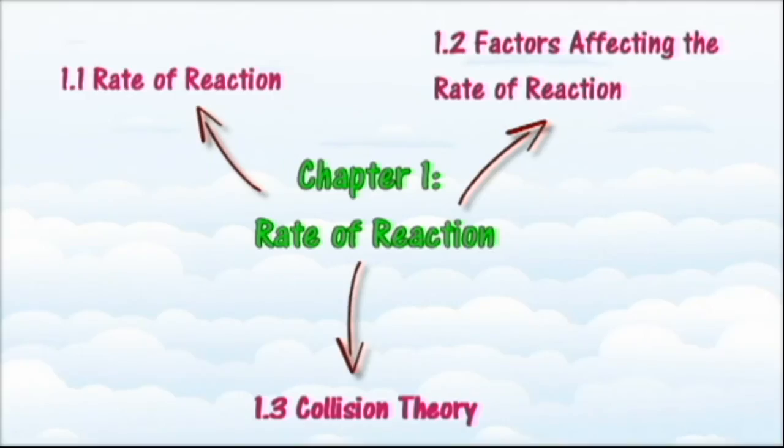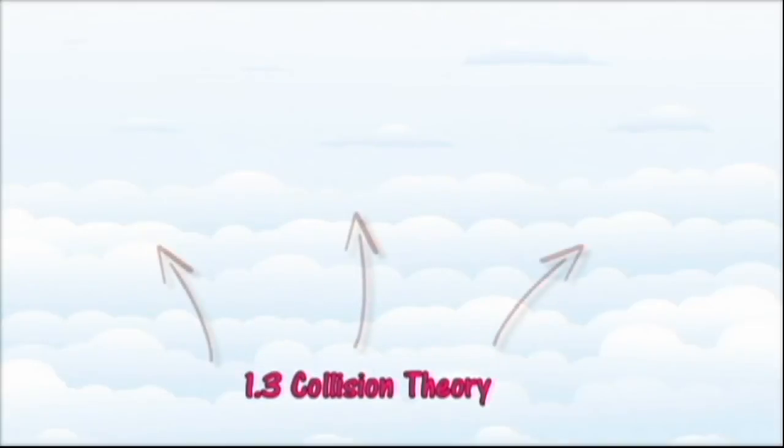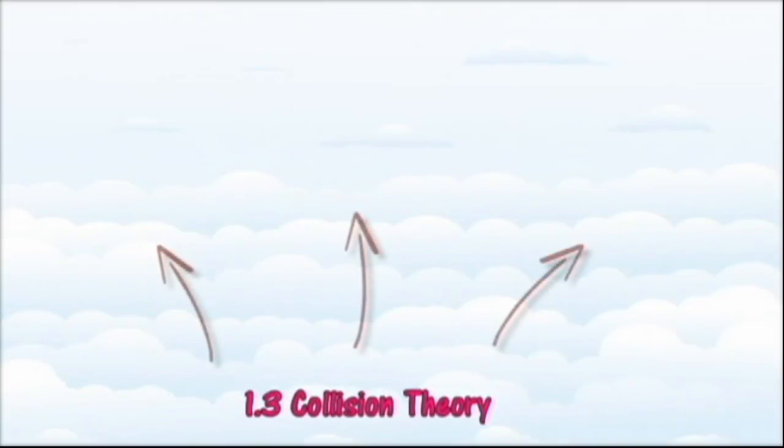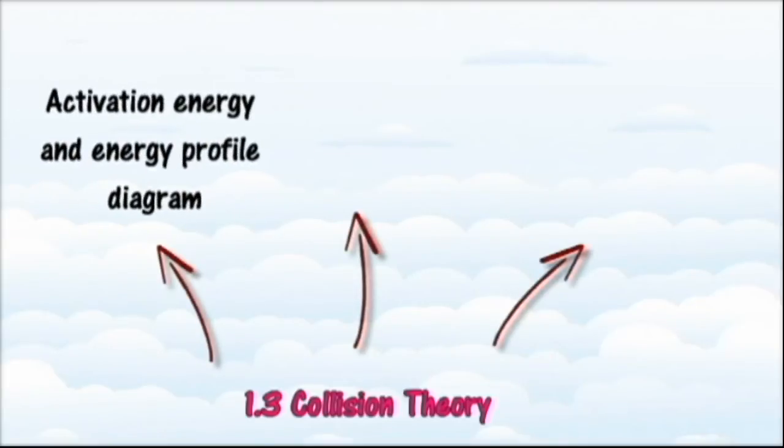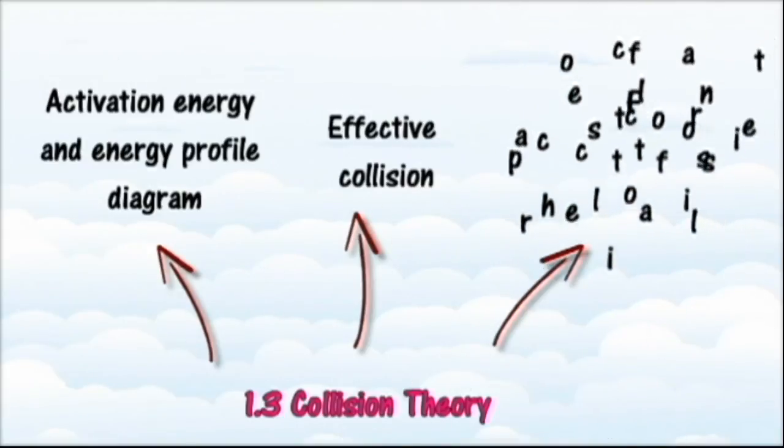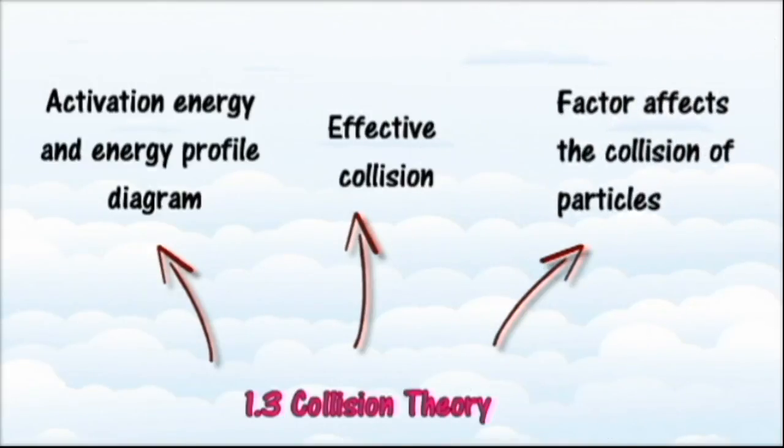In section 1.3 we will learn about the collision theory that will help us to explain the factors affecting the rate of reaction. At the end of this section you should be able to describe activation energy and sketch and describe energy profile diagrams, relate the frequency of effective collisions with the rate of reaction and relate the frequency of effective collisions with factors influencing the rate of reaction, and describe how a certain factor affects the collision of particles in a reaction.